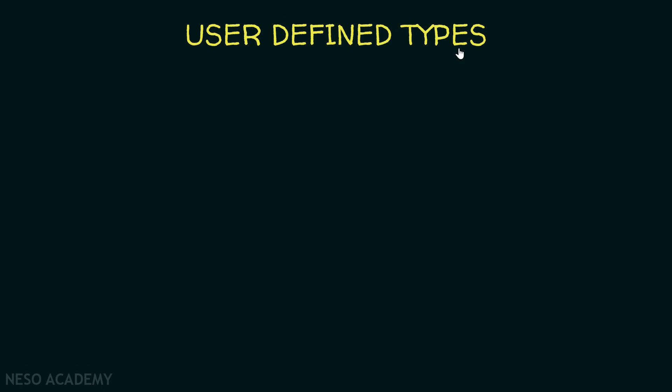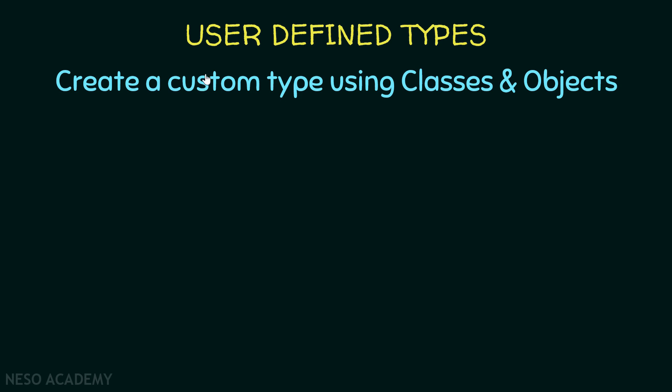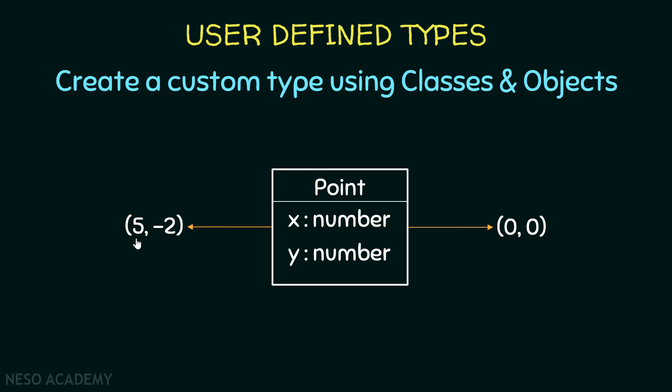Finally, let's talk about user-defined types. This is related to classes and objects. We can create a custom type using classes and objects. For example, suppose that we create a class called Point. We can say that each point has an abscissa and an ordinate, or x and y. In this case, x is a number and y is a number. After we create this class, we can create objects from this class. Each object will be a point. We can create a point where x equals 5 and y equals -2, and also a point where x equals 0 and y equals 0. Of course, you can create any point that you want. What's important is that each point will be an object of this class, and each point has an abscissa and an ordinate. We're going to talk about this later, but I wanted to give you an idea. Remember that in this case, the point is the class and these are the objects.